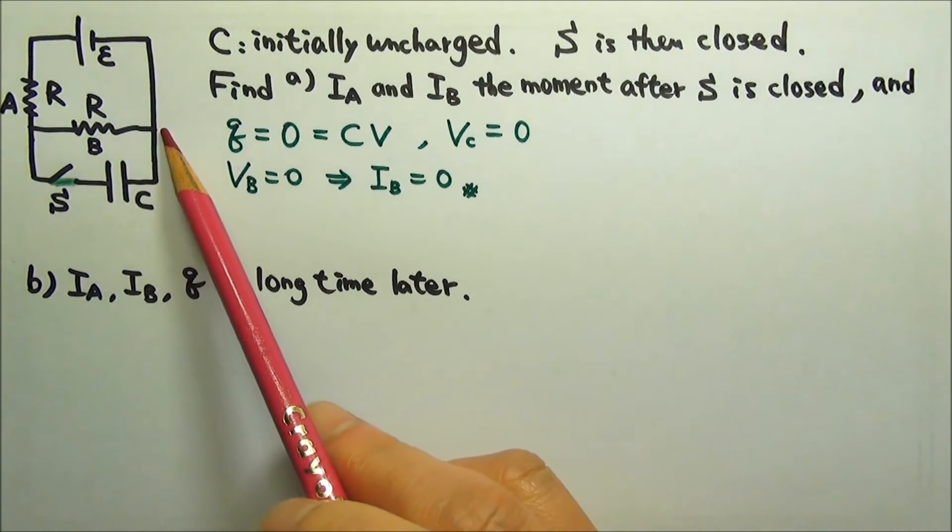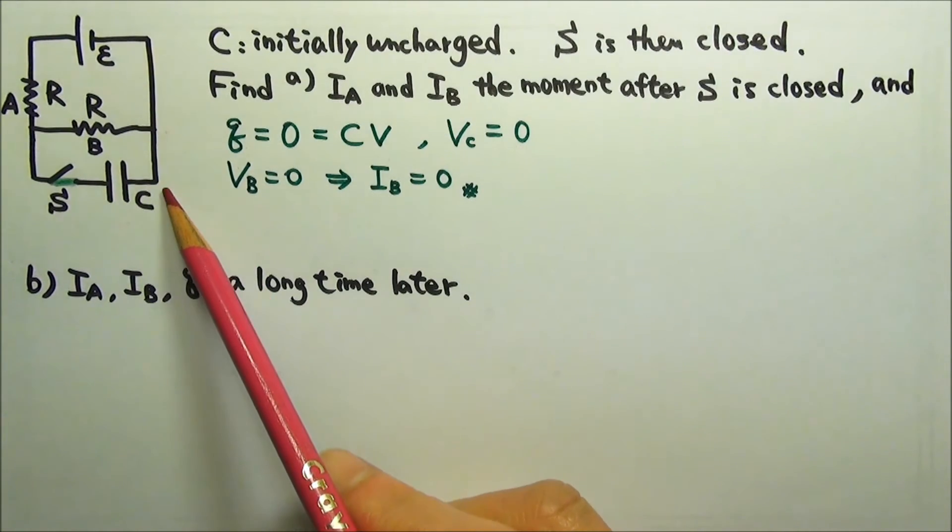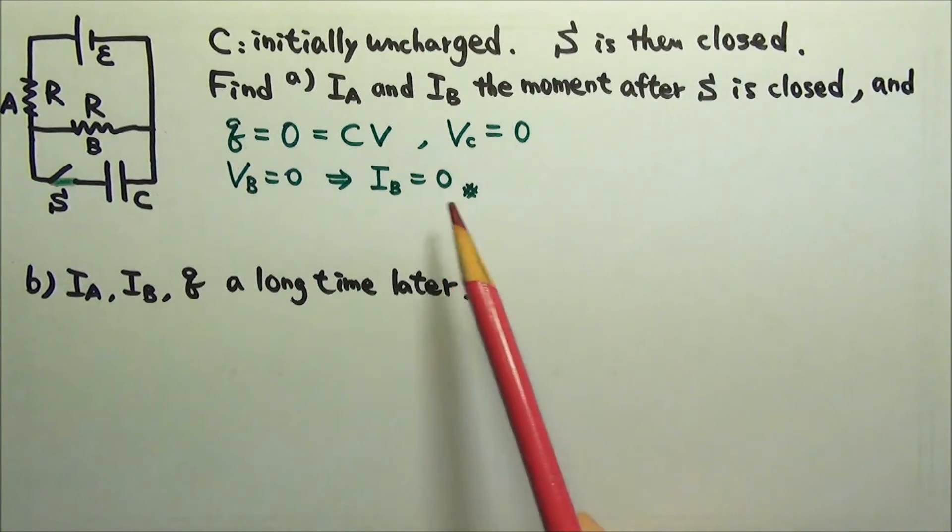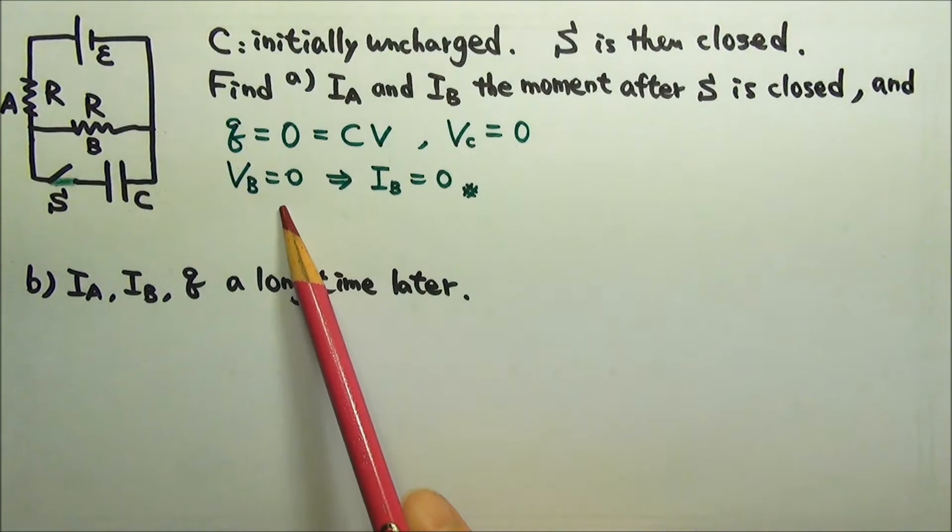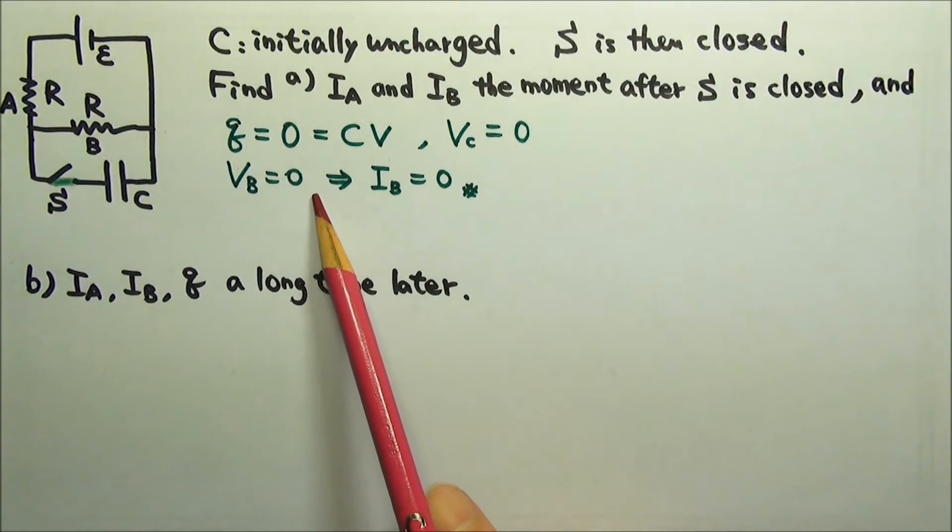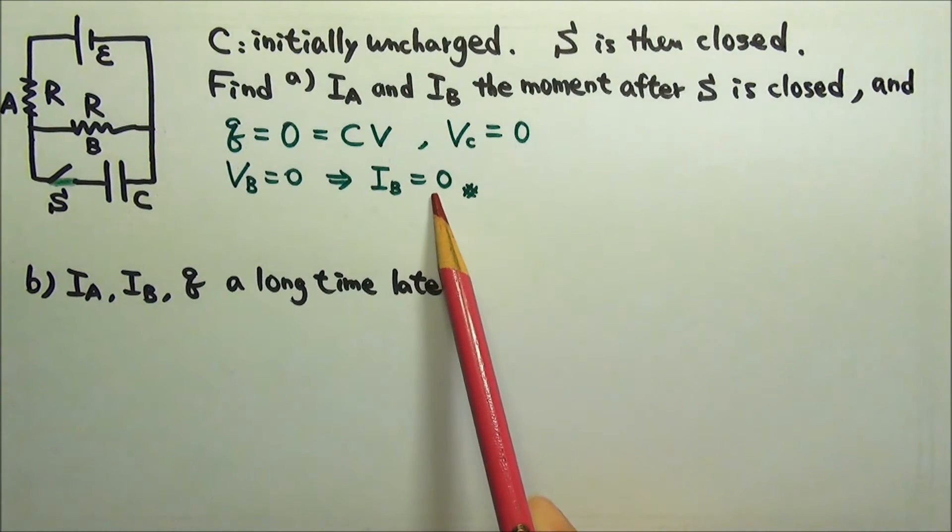Because resistor B and the capacitor are in parallel, they get the same zero volts. Since resistor B gets zero volts, it gets no current.